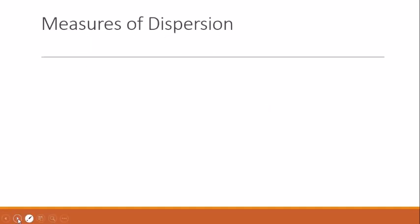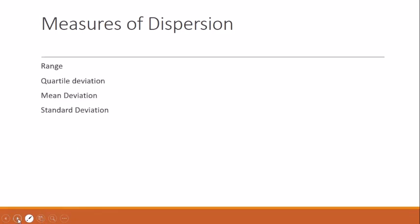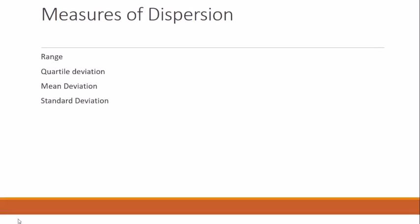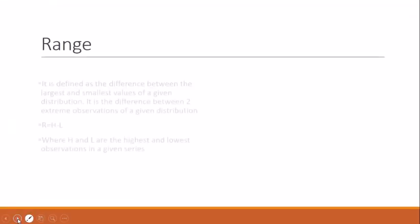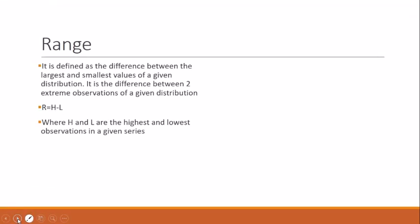The various measures we are going to study today are range, quartile deviation, mean deviation, and standard deviation. Range is defined as the difference between the largest and smallest values of a given distribution — the difference between two extreme observations. The formula is R = H minus L, where H and L are the highest and lowest observations in a given series.